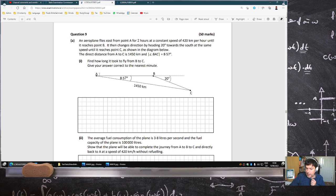Show that the plane will be able to complete the journey from A to B to C and directly back to A at a speed of 420. When I did this question, I interpreted that to mean A to B to C and then back C, B, A. But as others have pointed out, maybe it's A, B, C and then straight across to A like this.